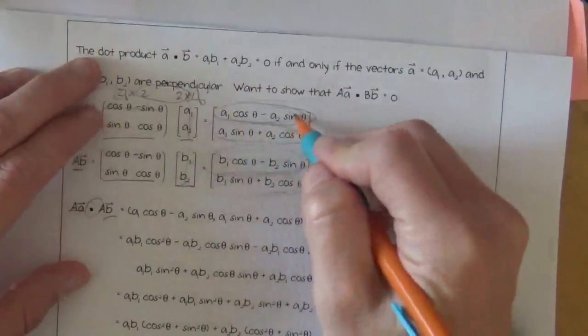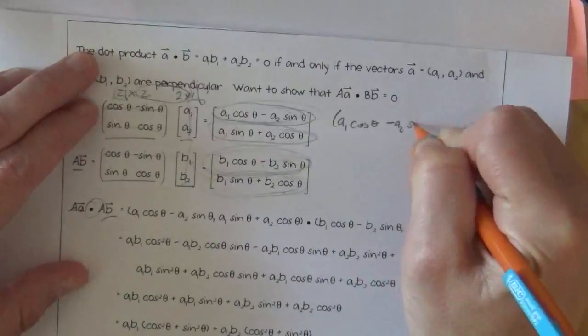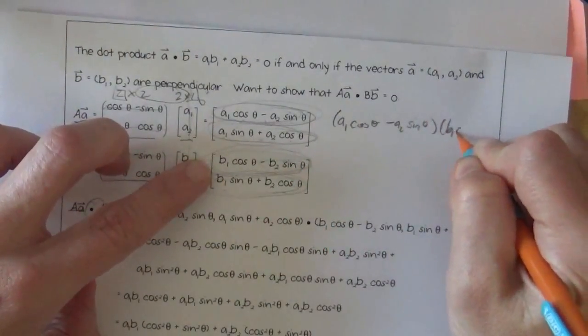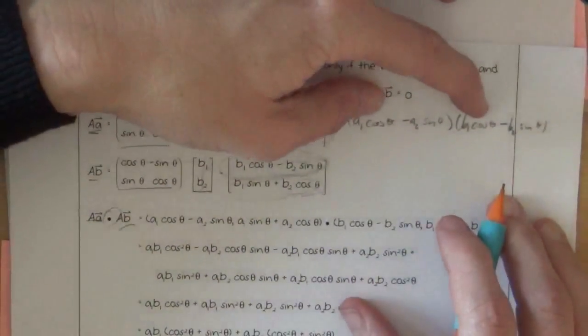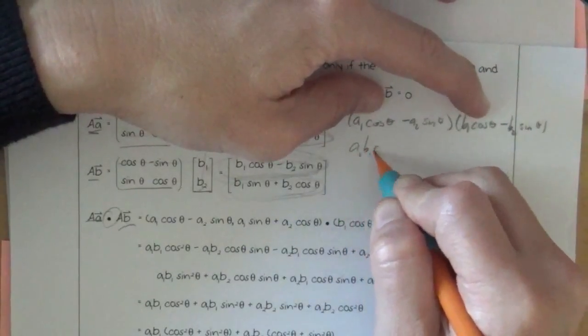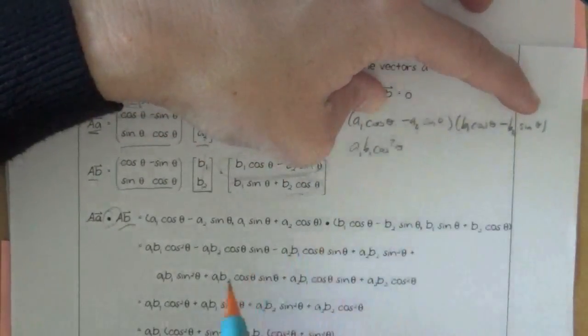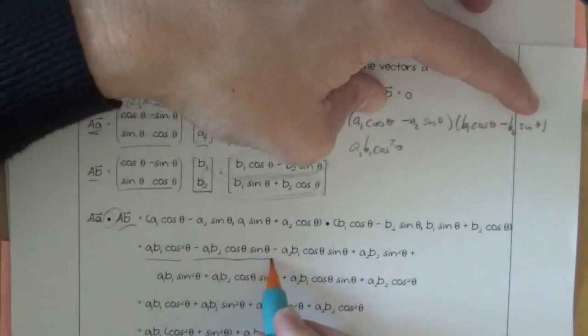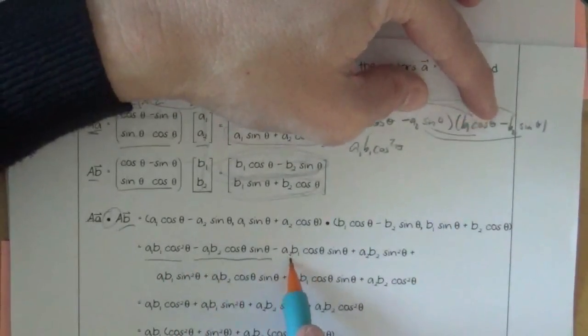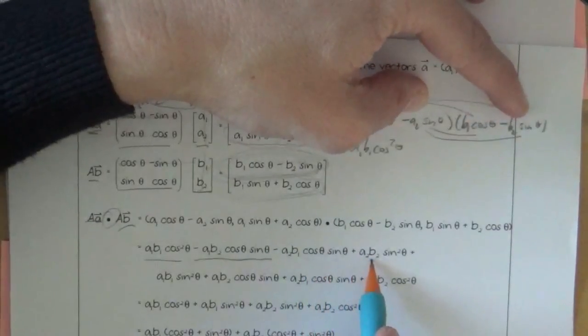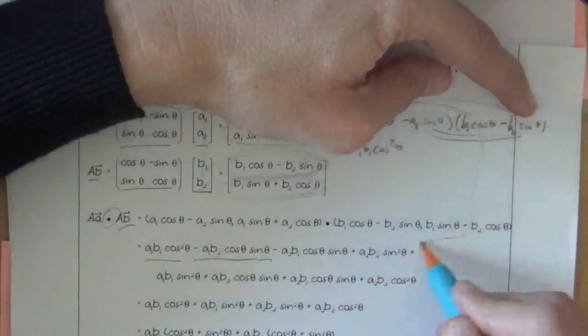If you multiply the X values together, A1 cosine theta minus A2 sine theta times the B1 cosine theta minus B2 sine theta, they're just foiling. So that's A1 B1 cosine theta sine theta cosine theta, and then minus A2 B1 cosine theta sine theta, and then plus A2 B2 sine theta, sine squared theta, because it would be sine times sine. So that's where that top line is going for. That's the X's multiplied together.